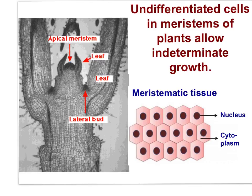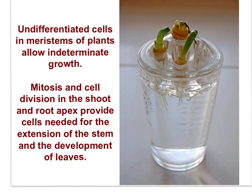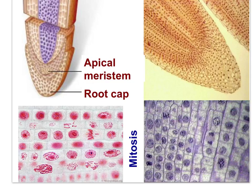Meristematic tissue is composed of undifferentiated cells, much like stem cells, that serve to grow new leaves and to extend the shoot and root by active cell division. You've probably had the experience of placing an onion into water — the shoot grows and the roots grow. An entirely new plant can be generated. Mitosis and cell division in the shoot and root apex provide the cells needed for the extension of the stem and the development of leaves. We examined mitosis in onion root tips, which means we were viewing mitosis in apical meristem of the root.